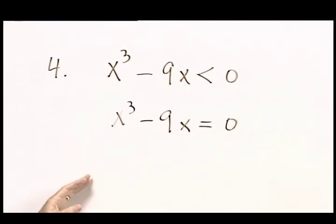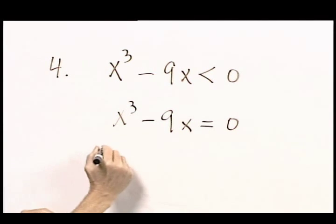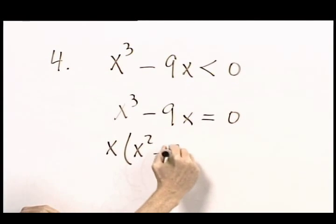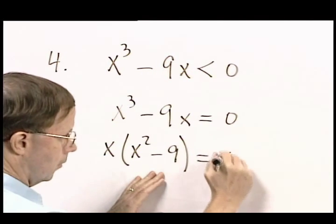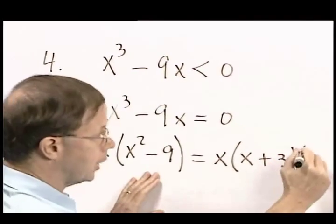I'm going to factor this. When I factor this, there is a common factor of x. And another expression that I can continue factoring. So I have x plus 3 times x minus 3.